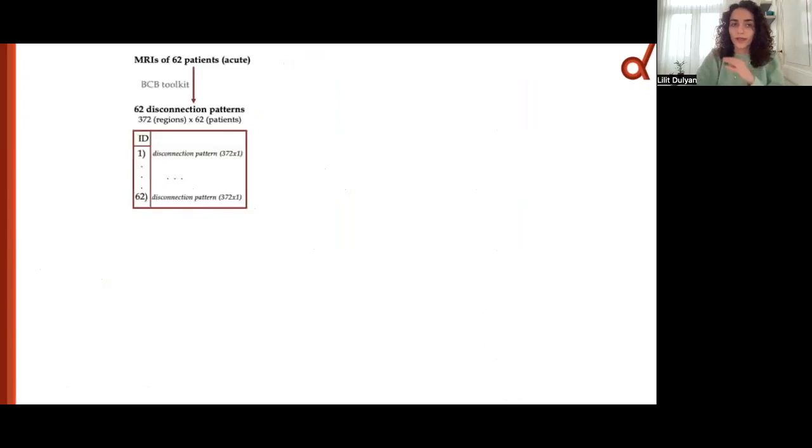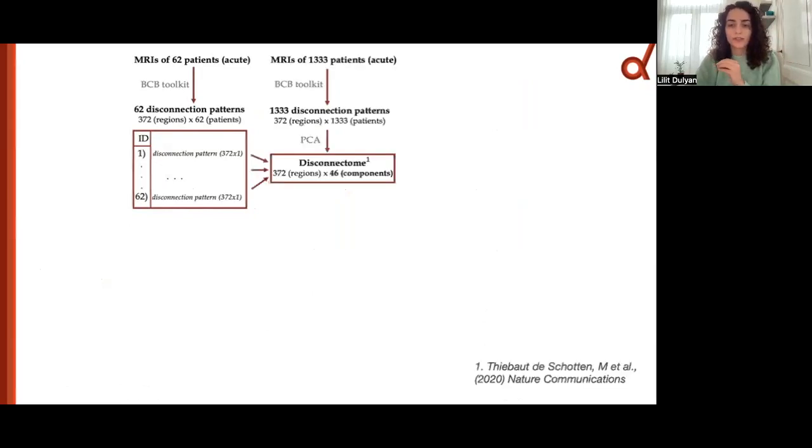So how did we do that? We had a data set of 62 patients, stroke patients at acute stage. Using BCB toolkit, we generated for each patient disconnection patterns. Then to reduce the dimensions, we mapped each patient's disconnection pattern onto a space derived from an independent large data set of ischemic stroke patients, which consists of 46 components.